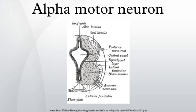Alpha motor neurons are large, multipolar lower motor neurons of the brainstem and spinal cord. They innervate extrafusal muscle fibers of skeletal muscle and are directly responsible for initiating their contraction. Alpha motor neurons are distinct from gamma motor neurons, which innervate intrafusal muscle fibers of muscle spindles.